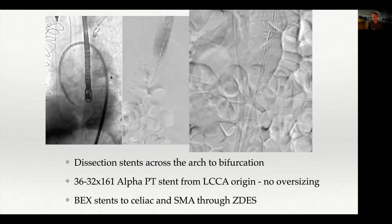The reason for using uncovered stents is to avoid covering the arch vessels or over-pressurizing the false lumen. Placing uncovered stents across the arch is off-label and not recommended by the manufacturer — but this patient is in extremis. Dissection stents were placed all the way down to the bifurcation. A single covered stent was then placed from just distal to the left common carotid artery origin, sized to the true lumen — not oversized — because the aim is to restore true lumen flow without pressurizing the false lumen.